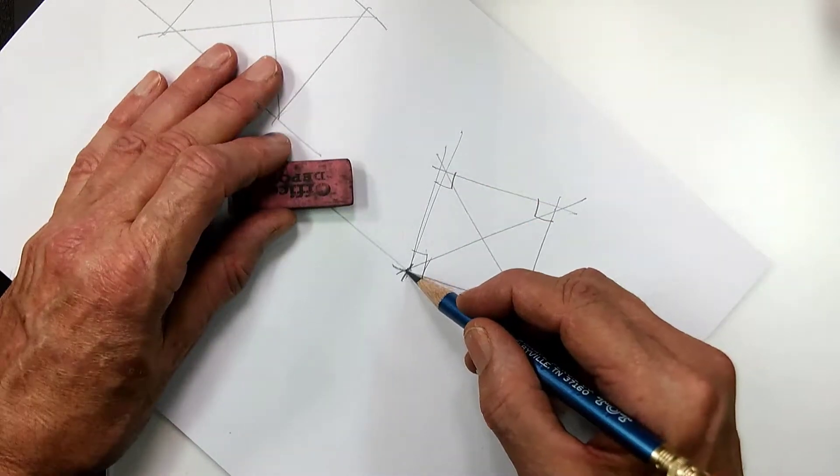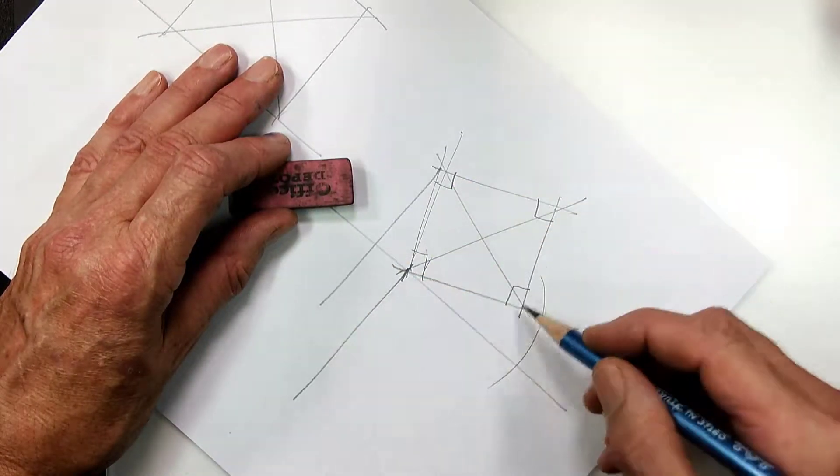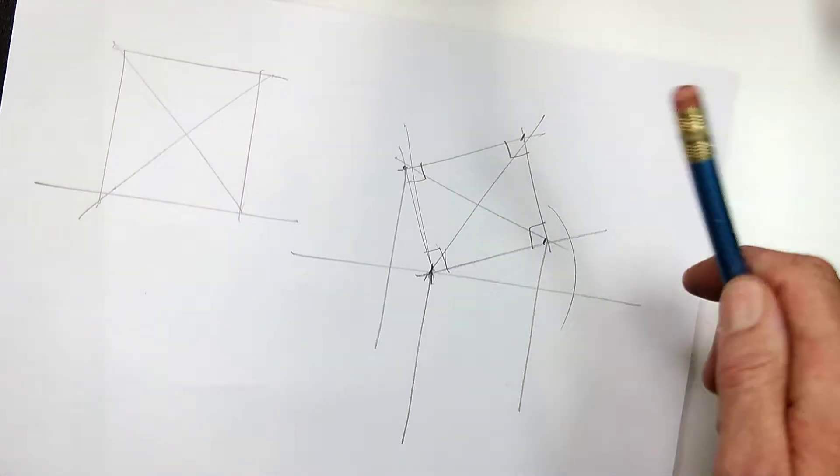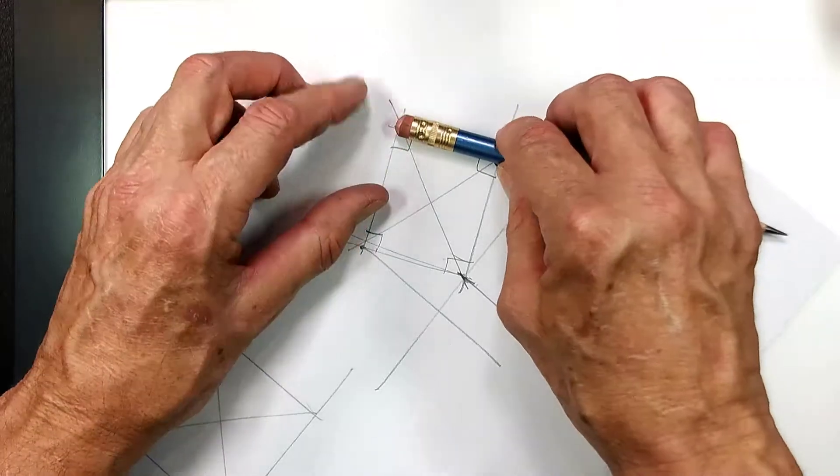Then you drop your vertical lines from each corner of the square. This is one unit.